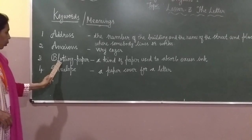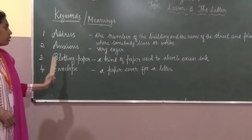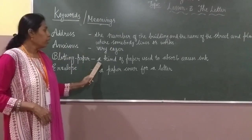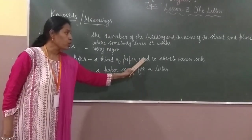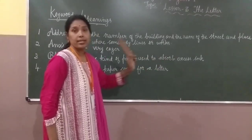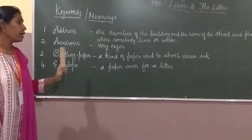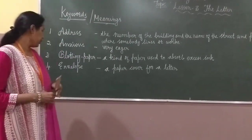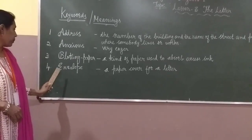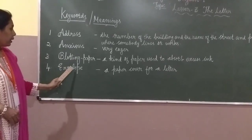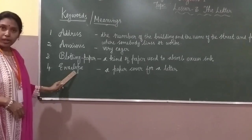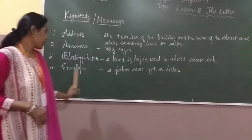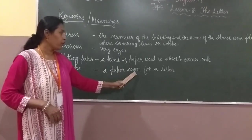Next: blotting paper. Blotting paper means a kind of paper used to absorb excess ink. Next: envelope. Envelope means a paper cover for a letter. What is an envelope? A paper cover for a letter.